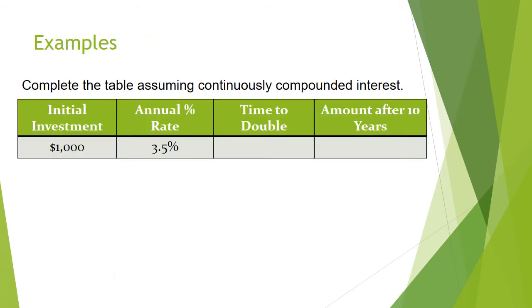Now we're going to do some problems. Complete the table assuming continuously compounded interest. Remember the formula for that is principle times e to the rt power. Pause the recording, give this a try, and resume to check your answer.